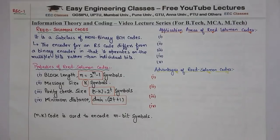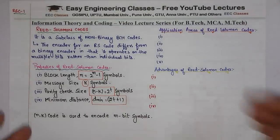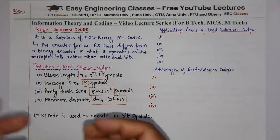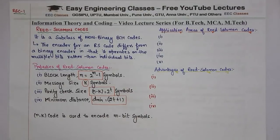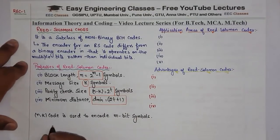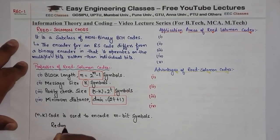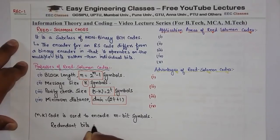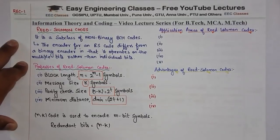इसमें redundant bits कितनी add होंगी? अगर n हमारी total block length है और उसमें k हमारा message bits है, तो redundant bits n minus k होंगी। So number of redundant bits equals n minus k.